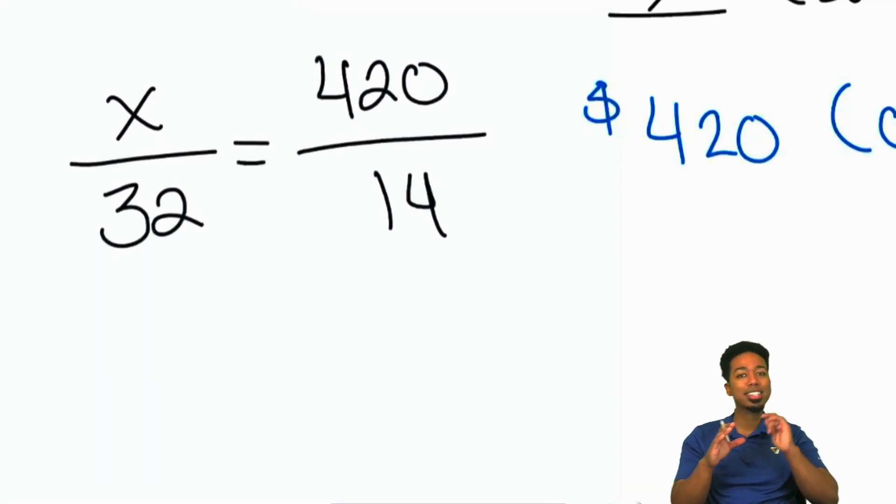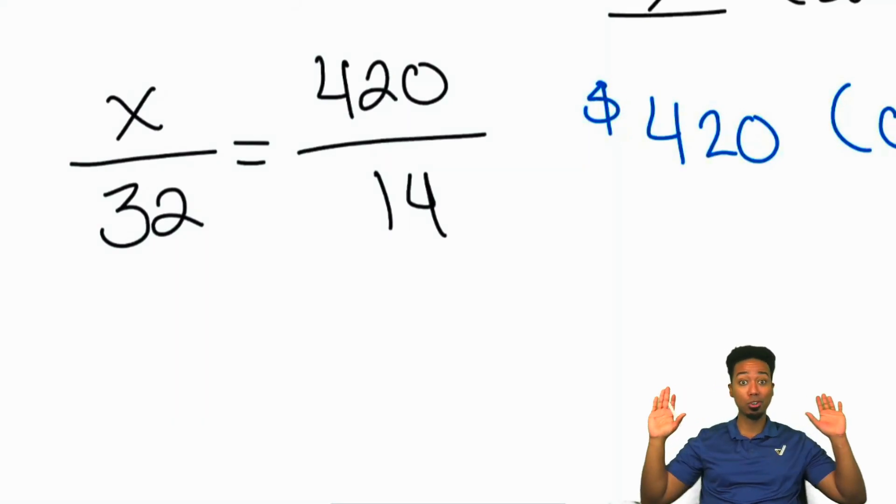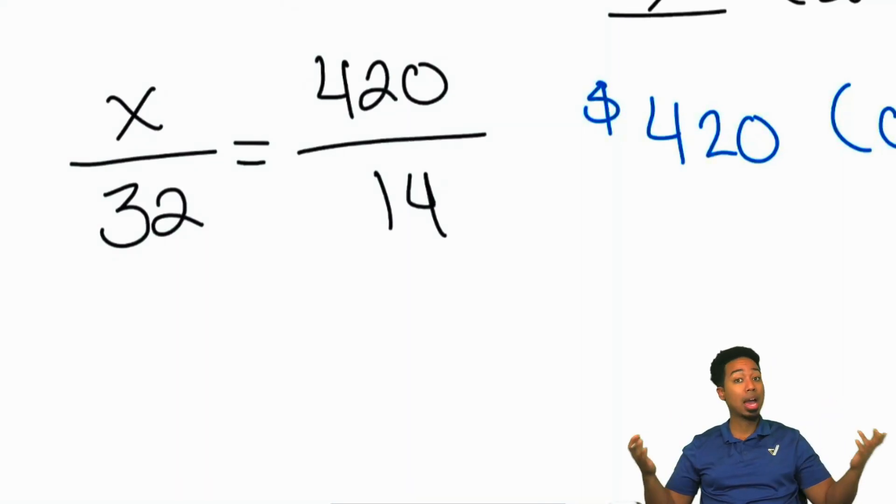2 times 7. So, that's how you can simplify things for yourself. Instead of trying to divide the top and the bottom by 14, even if you don't know if it can divide, ask yourself, well, could I do 7? Could I do 2? Think about it. Could I do 7? Could I divide 7 out of both 420 and 14?